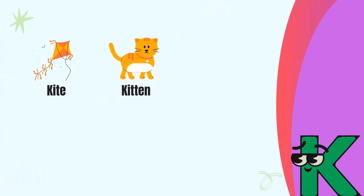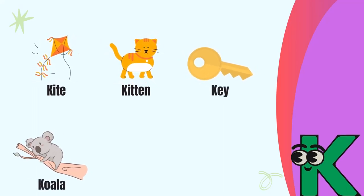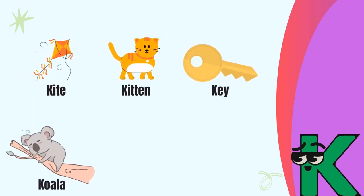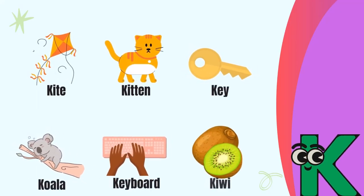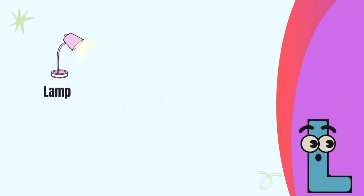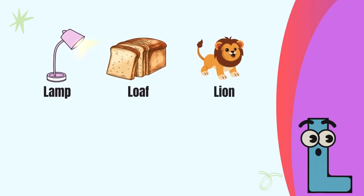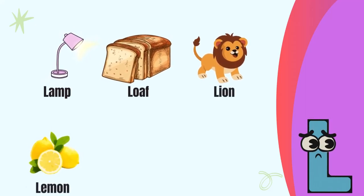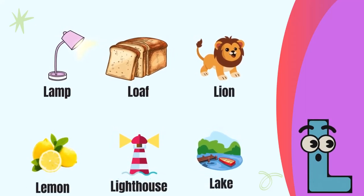Letter K. K for kite, K for kitten, K for key, K for koala. Letter L. L for lamp, L for loaf, L for lion, L for lemon, L for lighthouse, L for lake.